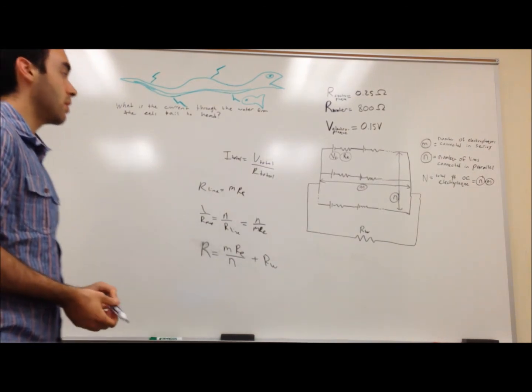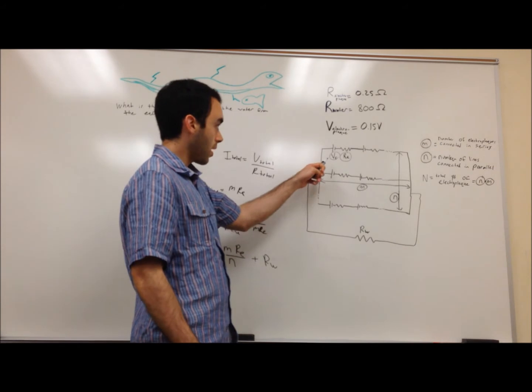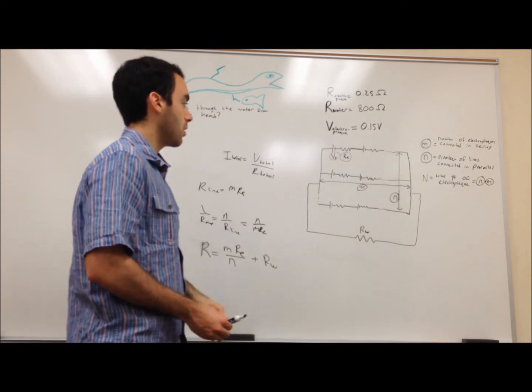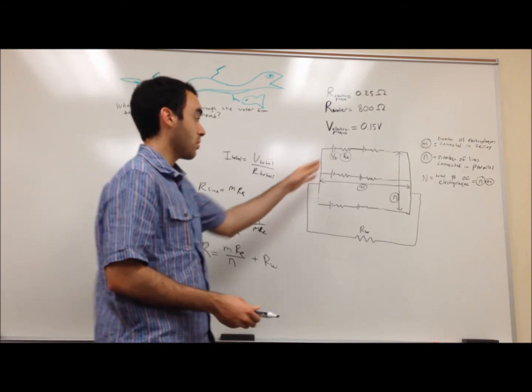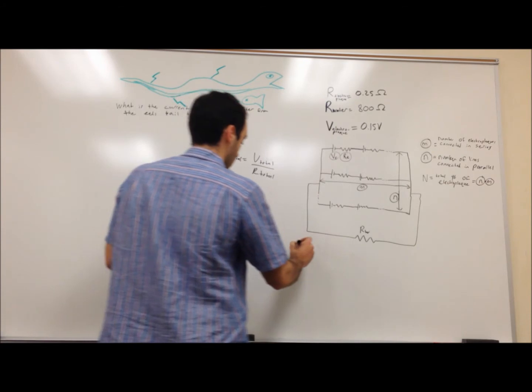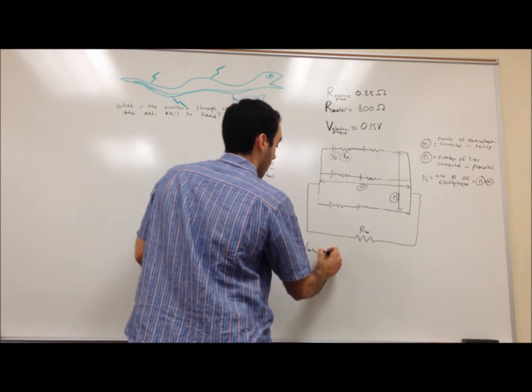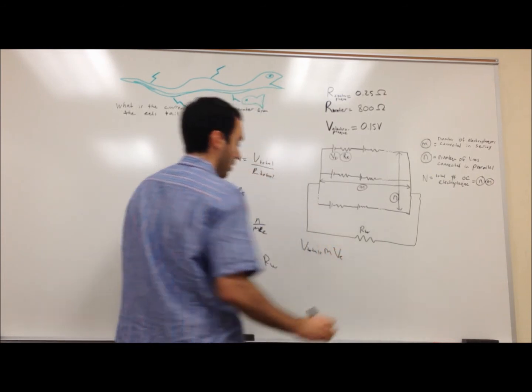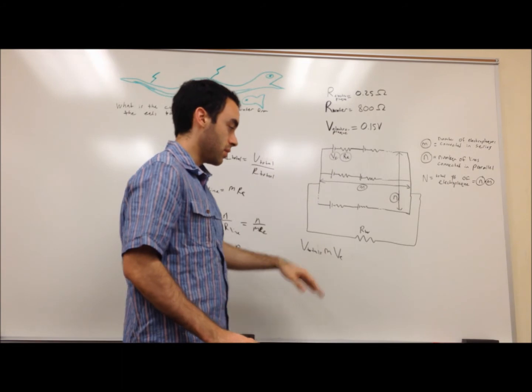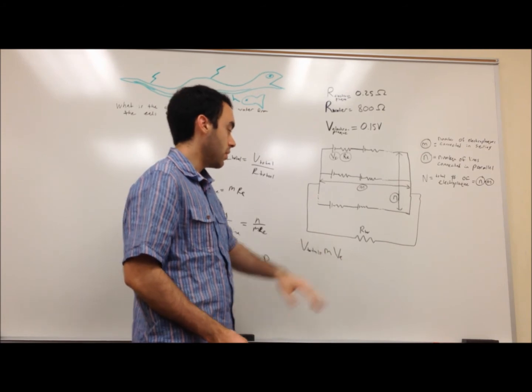So the next step after you've found the resistance of the circuit is to find the total voltage. Now, we know that the voltage of each electroplaque is 0.15 volts. We have m number of electroplaques in series and the voltage, the potential, and since they're modeled as capacitors, potentials of capacitors in series just adds. So we'll have V_total equals m times V_E. And we don't have to worry about the voltage across every single line because voltage in parallel is equal to each other, is the same. So you have V_total equals m times V_E as the total voltage.